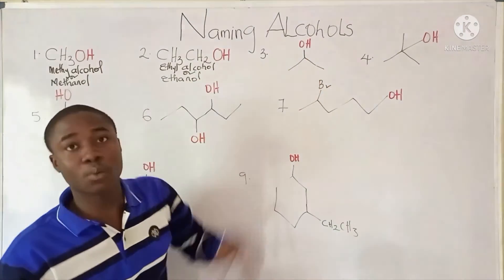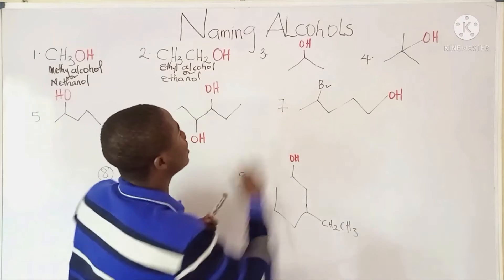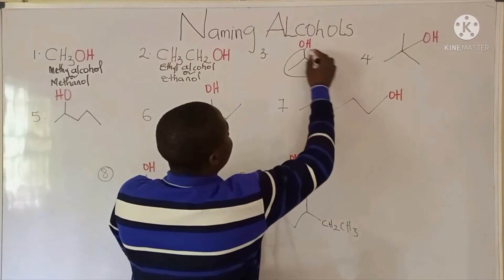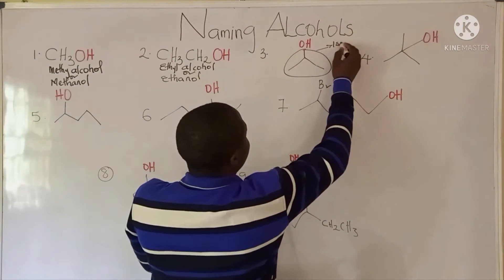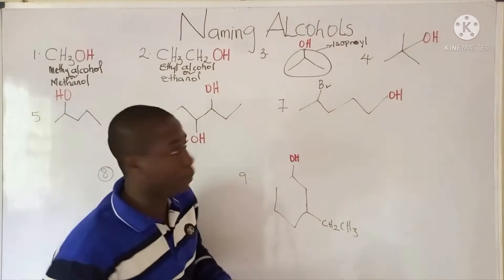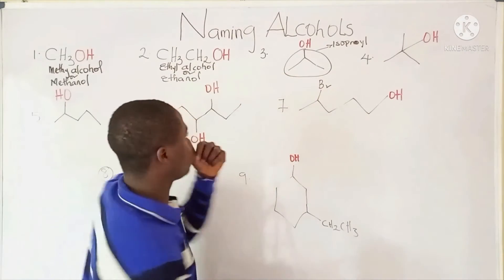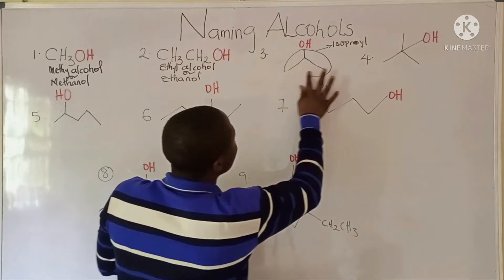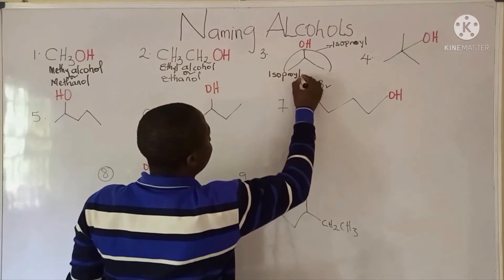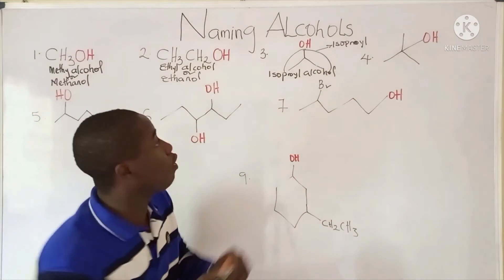Now, you can see this group — the OH group is attached to an isopropyl group. So it is called isopropyl, attached to the alcohol. So it is called isopropyl alcohol. The name of this compound becomes isopropyl alcohol, which is the common name.